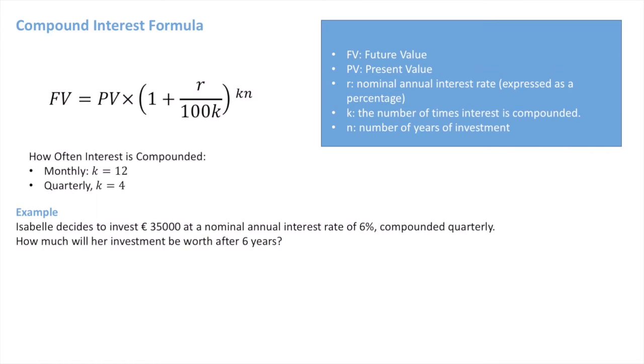So just using this question, there are a couple of things that we can point out here. First of all we can see that Isabel has 35,000 euros. So PV, that's the present value, equals 35,000.